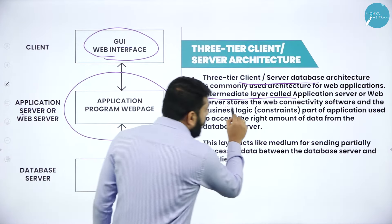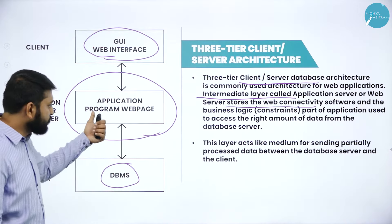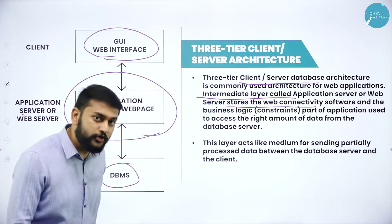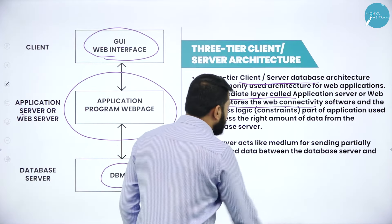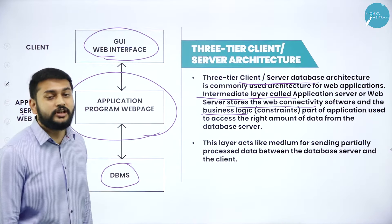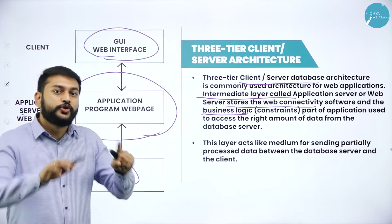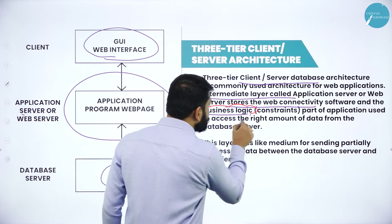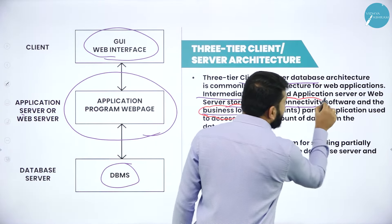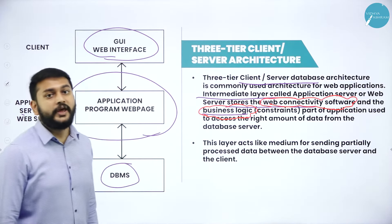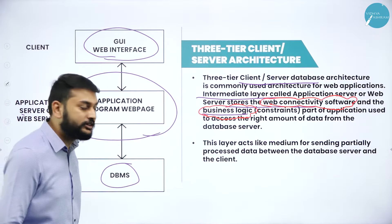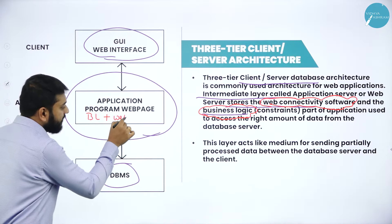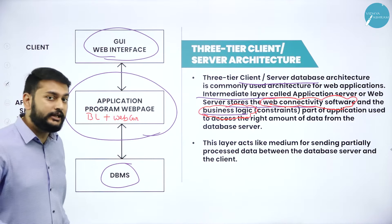In the three-tier architecture, there is an intermediate layer called the application server or web server that comes between the client and the database server. This intermediate layer stores the web connectivity software and business logic. Please remember these two keywords: business logic and web connectivity software.